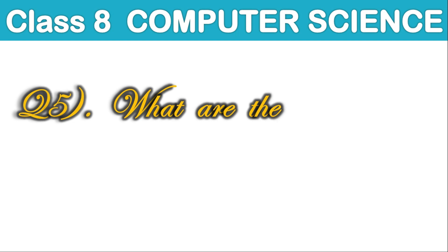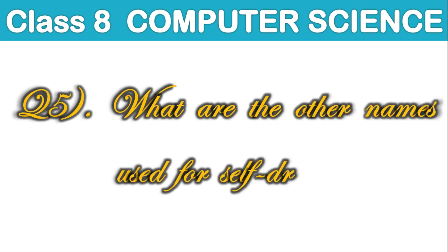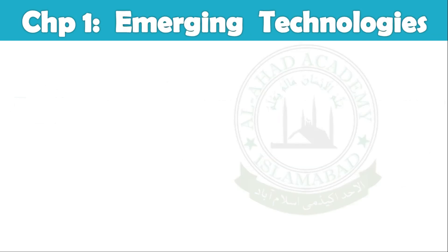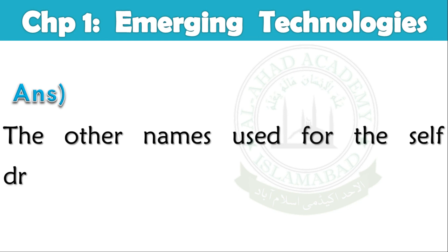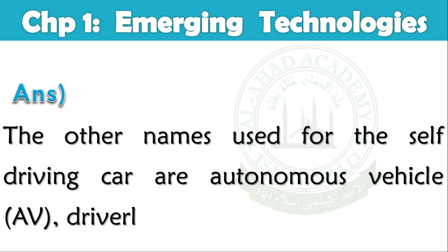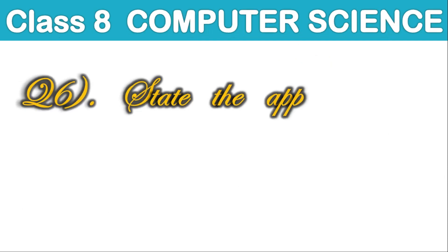Question number 5. What are the other names used for self-driving cars? Answer. The other names used for the self-driving car are Autonomous Vehicle, AV, Driverless Car, and Robotic Car.